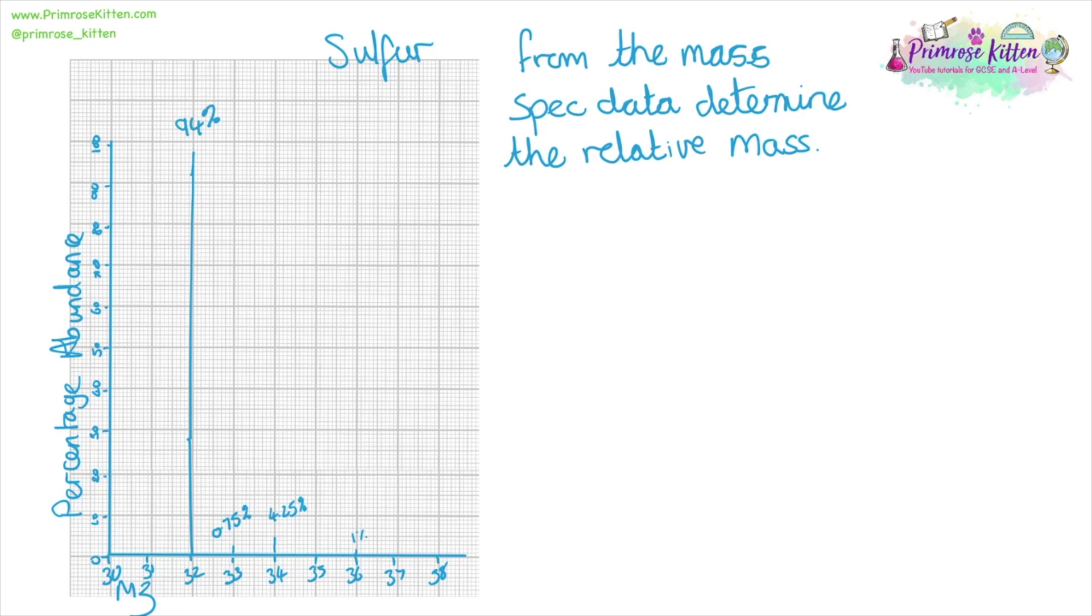The mass spec for sulfur is a touch more complicated and what you might see is they have actually written the values onto the graph for you. So we have 94% sulfur-32, 0.75% sulfur-33, 4.25% sulfur-34, and then 1% sulfur-36.